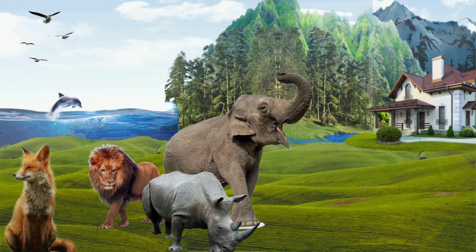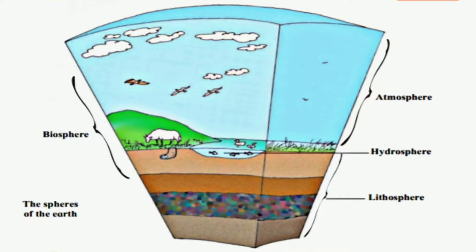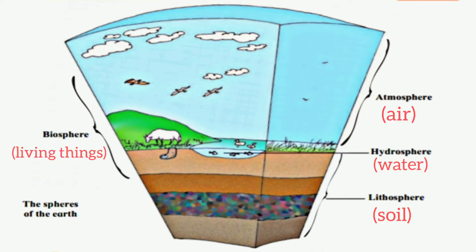The part of the earth where life exists — where human beings, animals, birds, and plants can live — is called the biosphere. So: lithosphere means soil, hydrosphere means water, atmosphere means air, and biosphere means living things. These are all called the spheres of the earth.